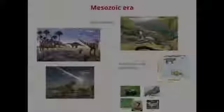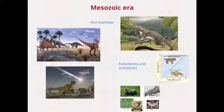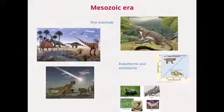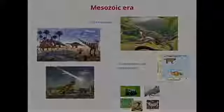Mesozoic era. During the Mesozoic era, most of the vertebrates were reptiles, especially dinosaurs. At this era, the first birds and mammals appeared. The evidence showed that most large animals were endotherms, which means that they can keep and produce their own heat. And reptiles were ectotherms, which means that they need the sun to obtain heat. At the end of this stage, most of the dinosaurs disappeared because of environmental changes.